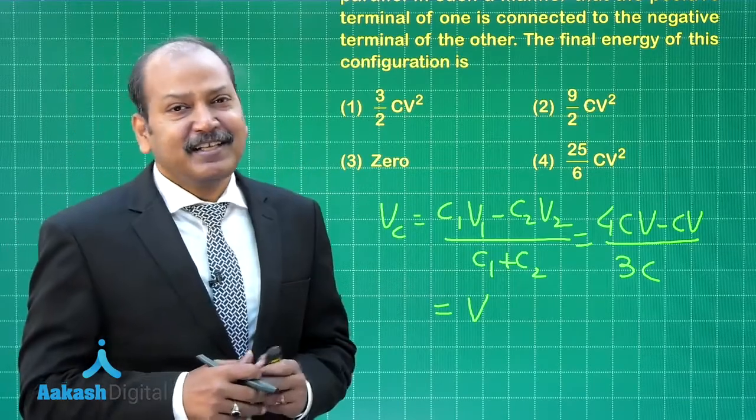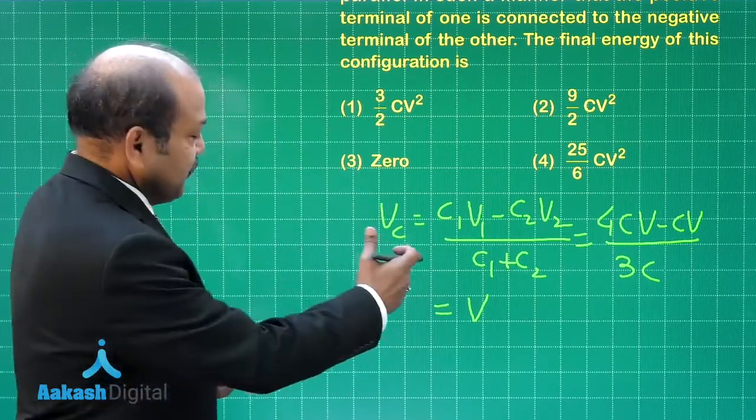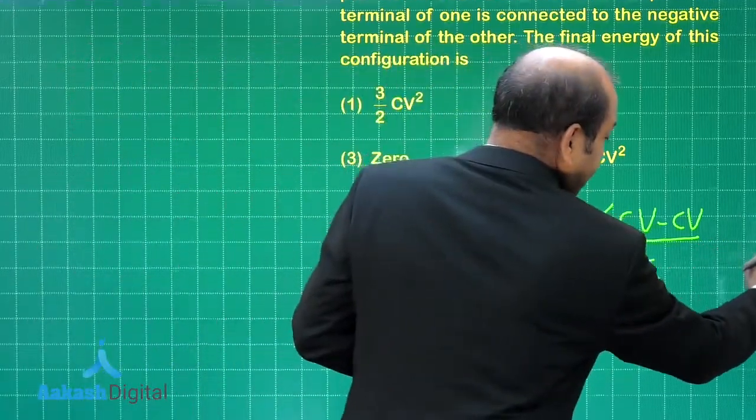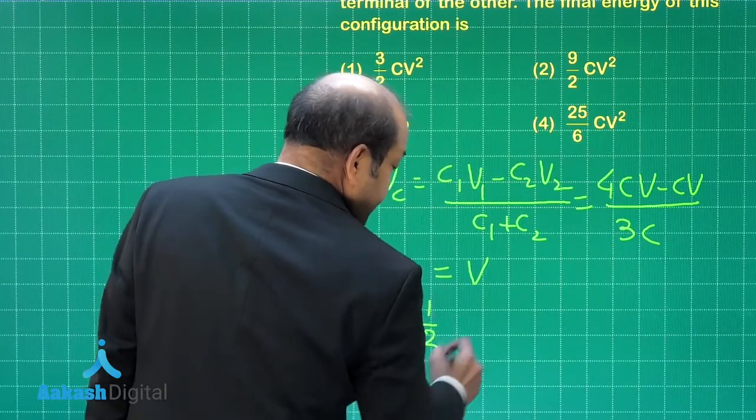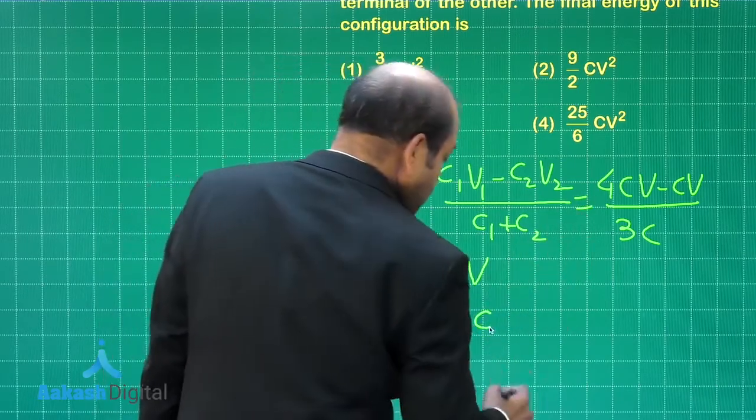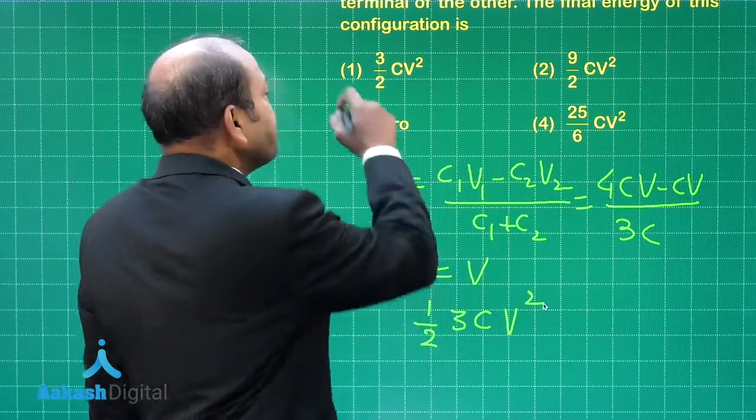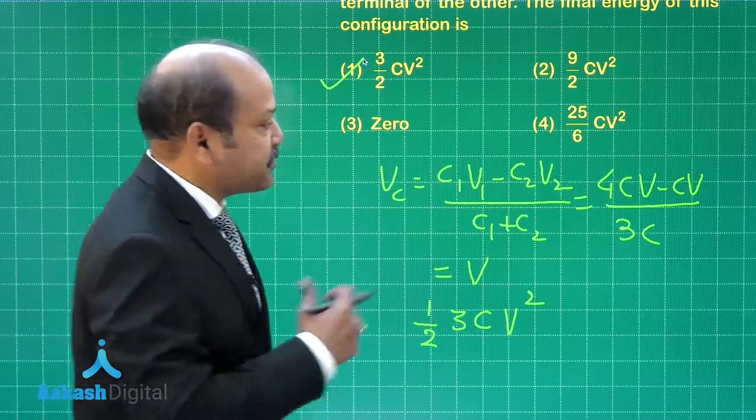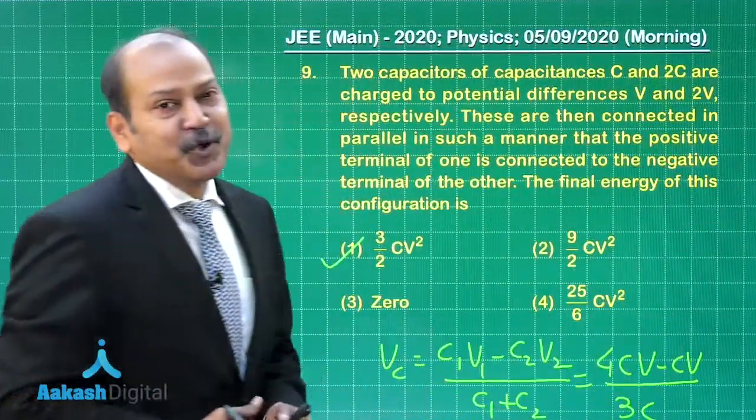So the final energy is half total capacitance into common potential square. That means the final energy stored in the capacitor is given as 1 by 2 into the total capacitance which is 3C into V square. So 3CV² by 2 and if you look at the options, the option 1 matches with our solution. So option 1 is correct. It is time now to go to question number 10.